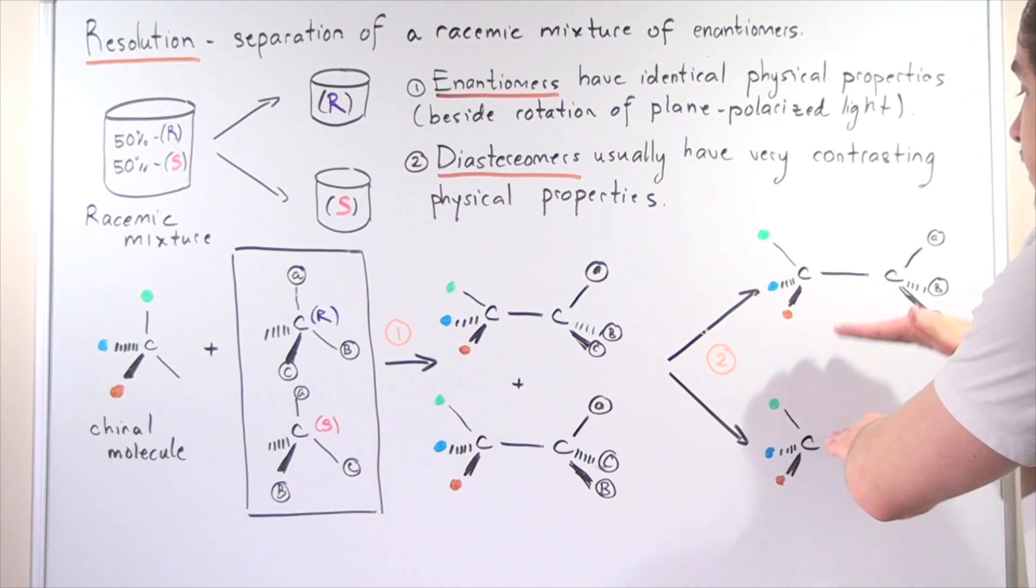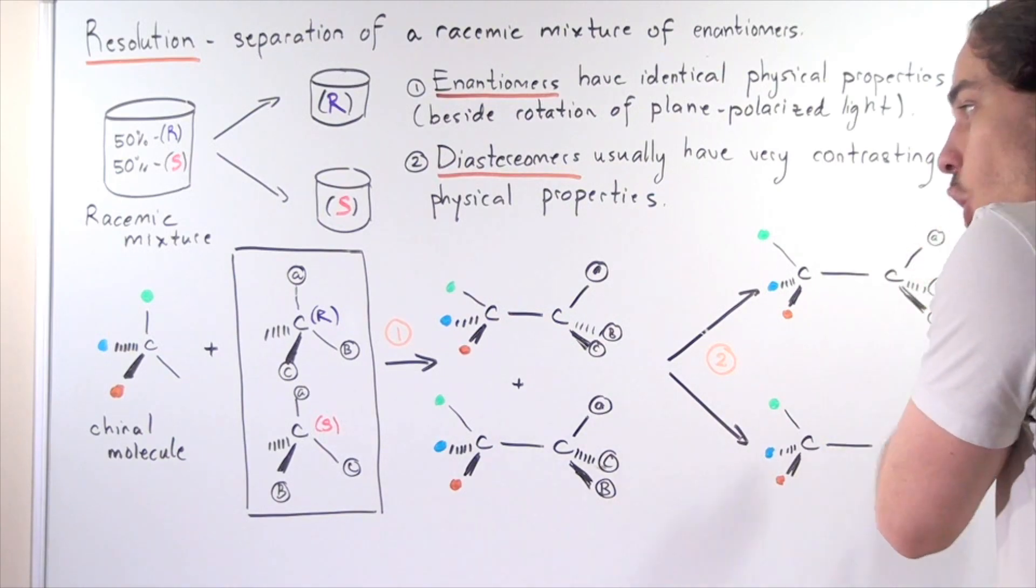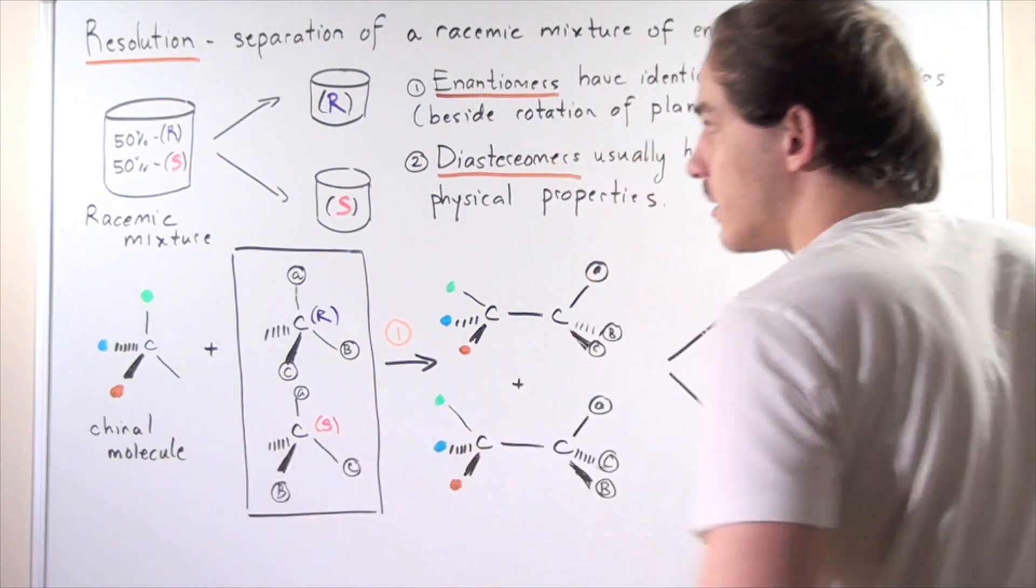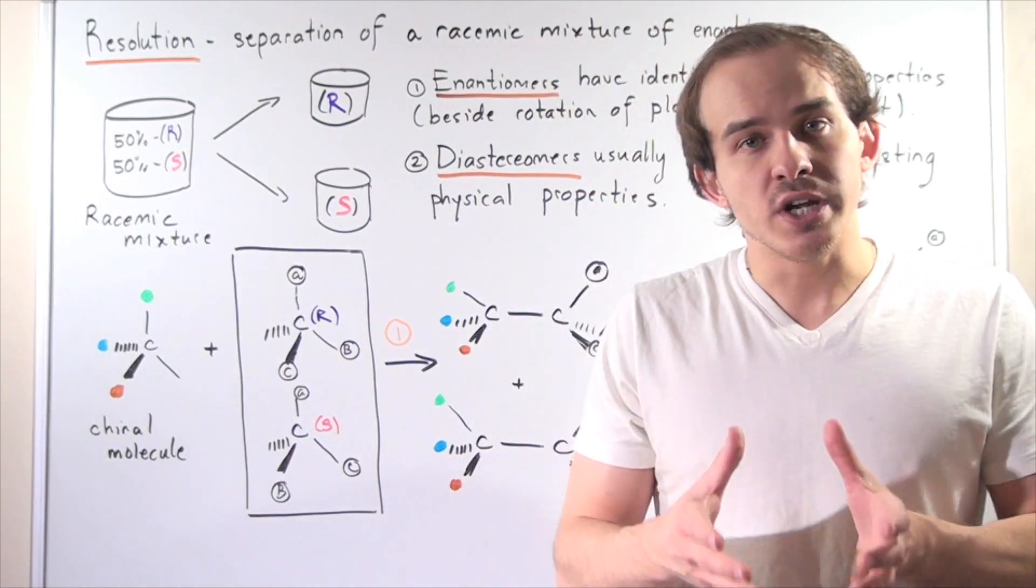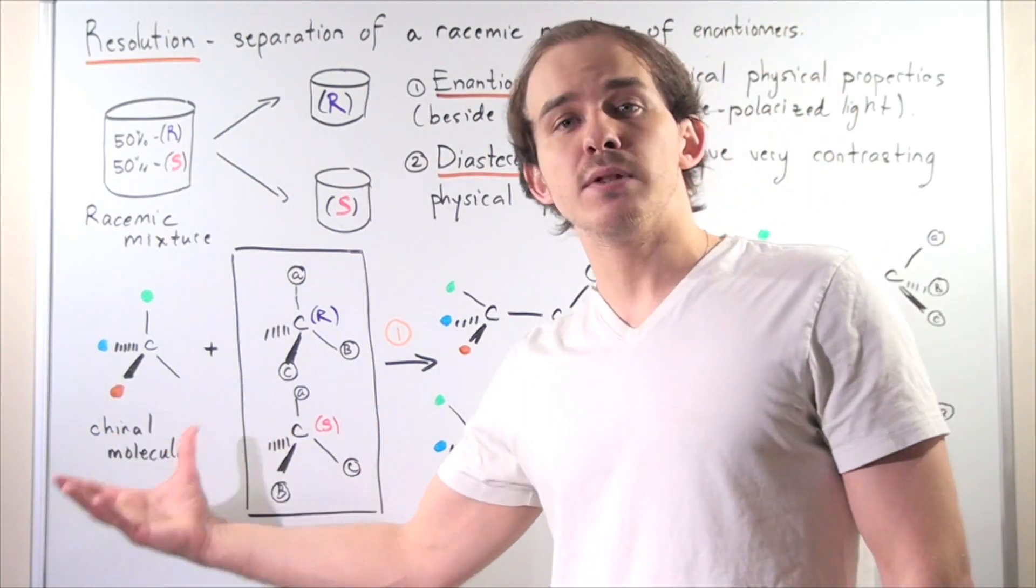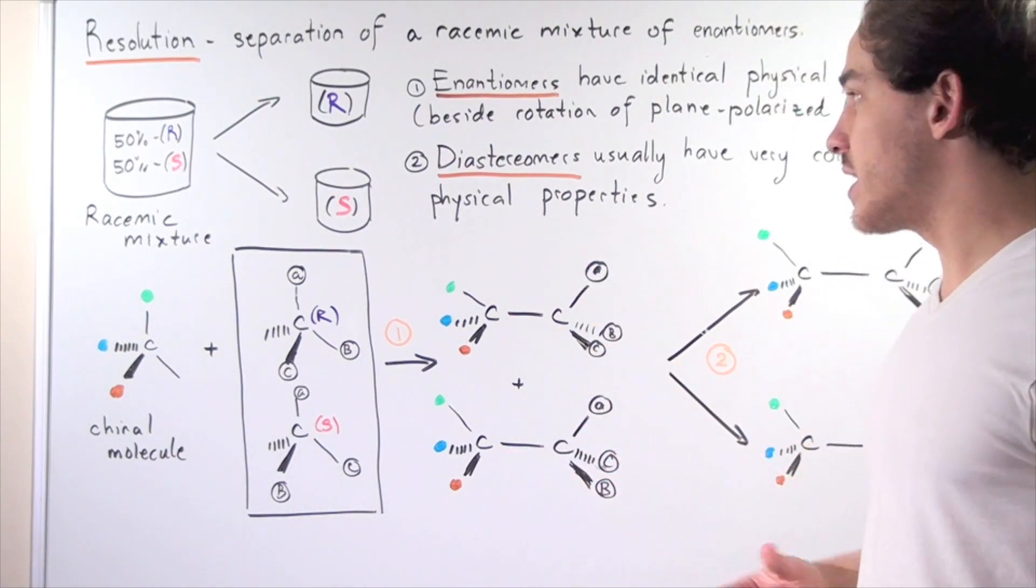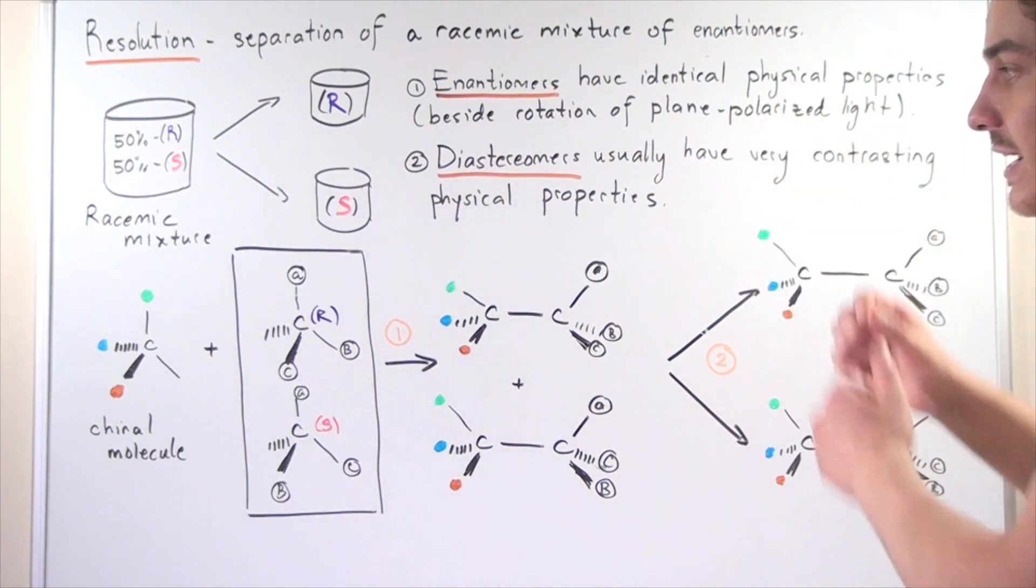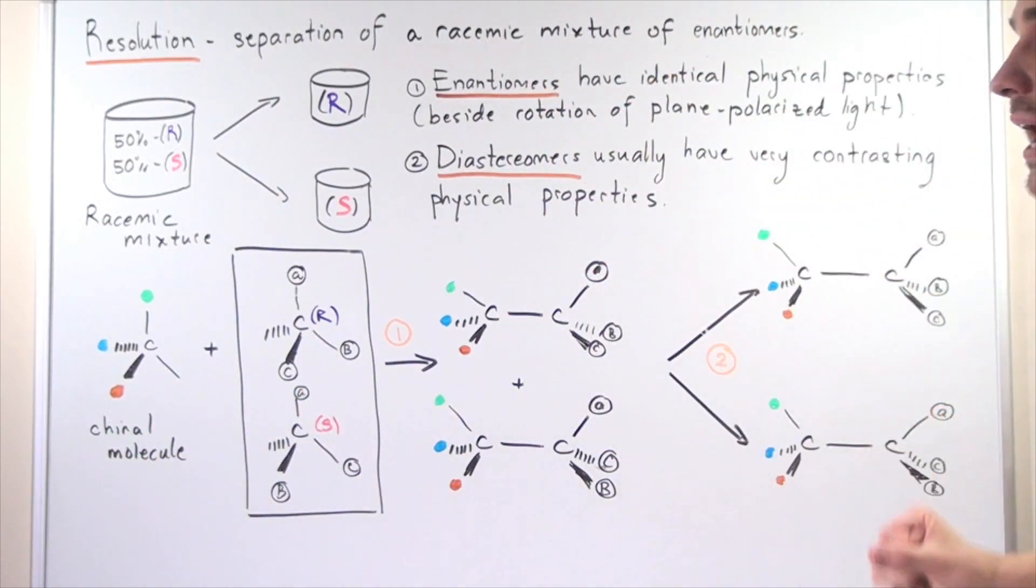Now we have completely separated them into two different mixtures. One contains only R and the chiral molecule, and one contains only S and the chiral molecule. Once again, resolution is the separation of your racemic mixture of enantiomers using a chiral molecule. You produce diastereomers, which are then separated by physical differences, and finally you revert back to your two molecules in the final step.